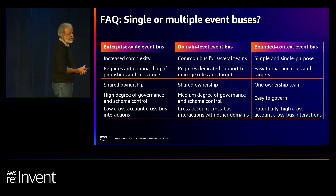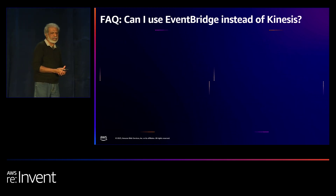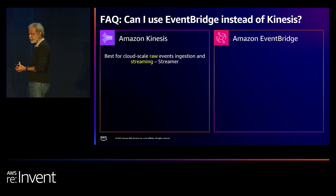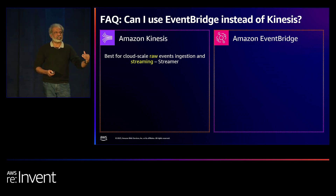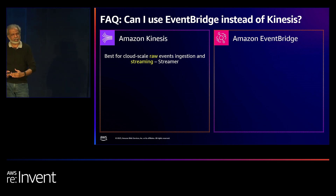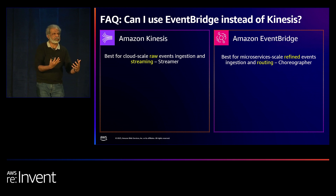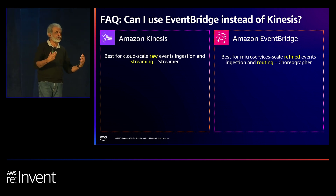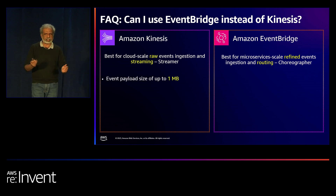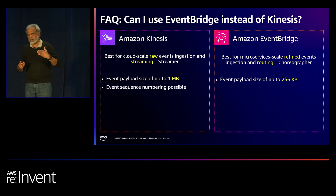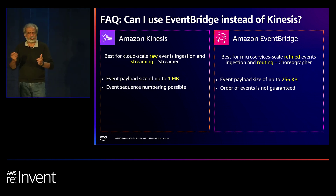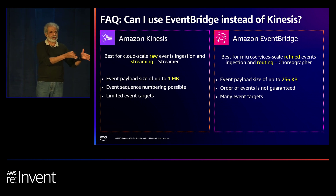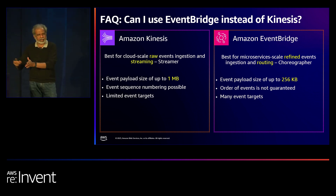The next common question: should I use EventBridge or Kinesis? Can I replace Kinesis with EventBridge? Kinesis has a purpose — it's there for cloud-scale event ingestion or streaming; I call it just a streamer. EventBridge is a more refined event handling mechanism for microservices or applications — you don't just dump everything into it. It's more of a choreographer. There are also differences in payload sizes and how long events can be kept. Unless you have a valid use case, leave what's best for Kinesis to Kinesis, and use EventBridge for what it does best.